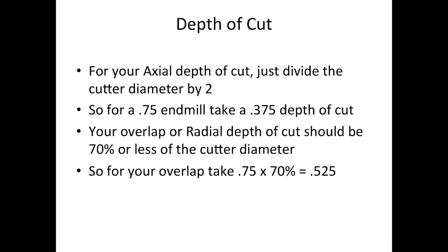Next we're going to figure out our depth of cut. For the axial depth of cut, simply divide the cutter diameter by 2. So a 3/4 inch end mill — 0.75 divided by 2 — gives us 0.375 depth of cut. Your overlap, or radial depth of cut, should be about 70% of the cutter diameter. So 0.75 times 70% is 0.525. The axial depth of cut is your Z movement, and the radial depth of cut is your X.